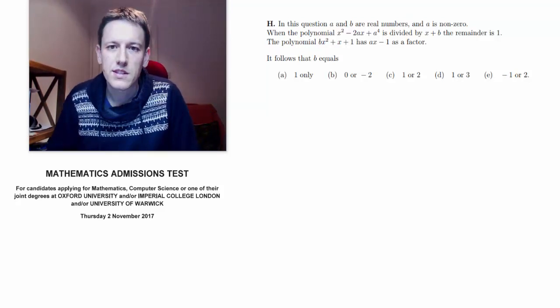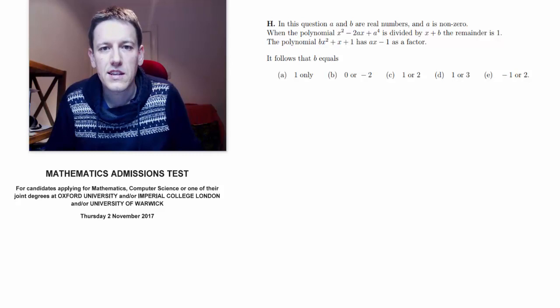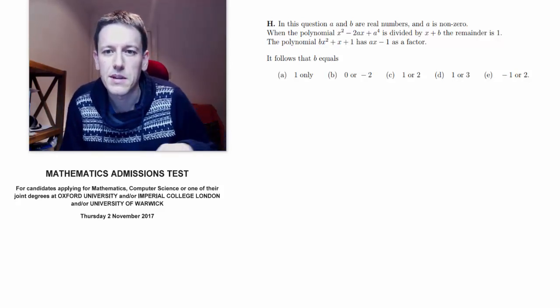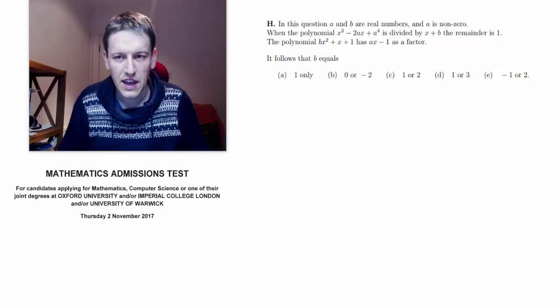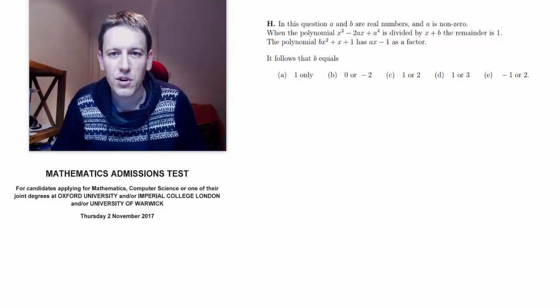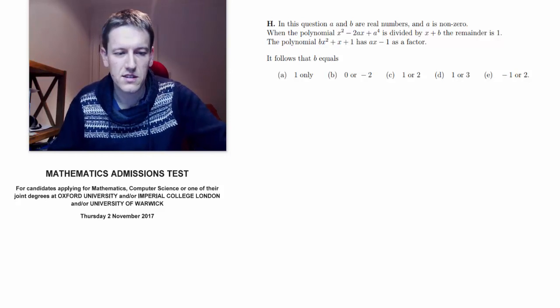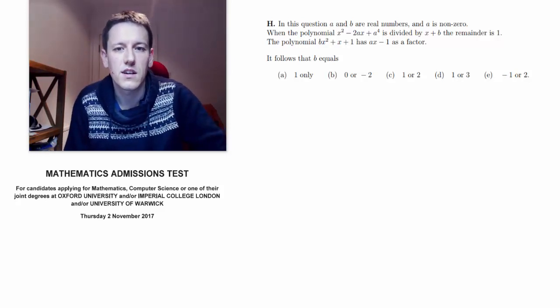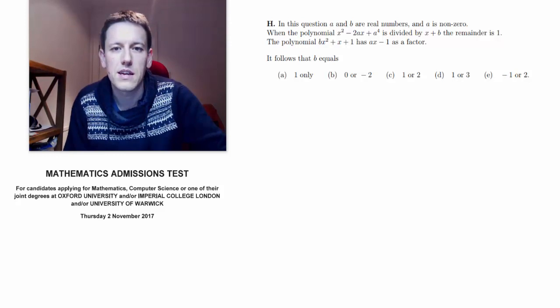So it says a and b are real numbers, a is non-zero, now we've got a polynomial that says when it's divided by x plus b the remainder is equal to 1, and another polynomial that has ax minus 1 as a factor, and then it says what can we conclude about b here.